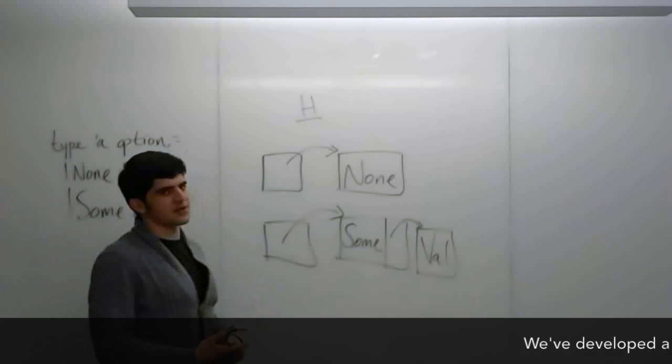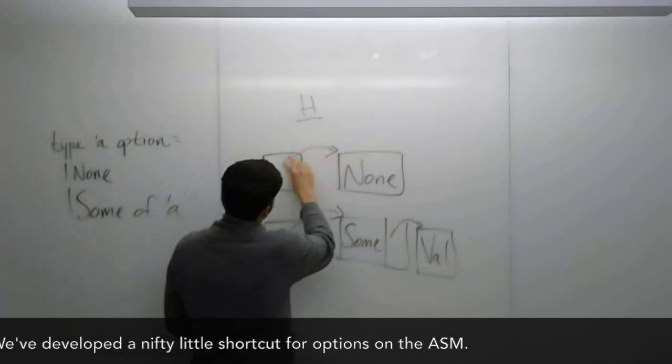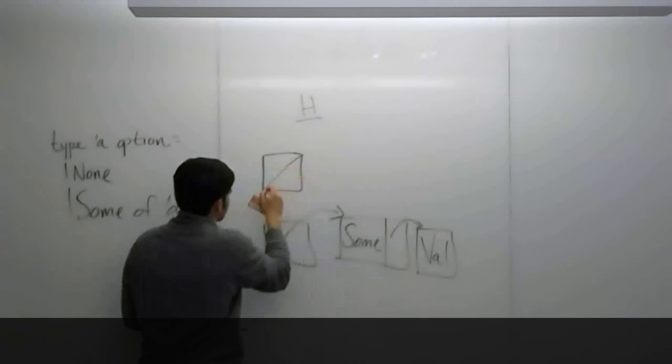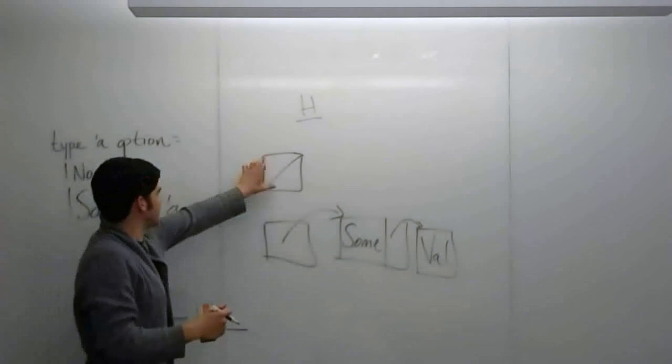So we've developed this nifty little shorthand. Instead of having to draw an arrow to none, we can just draw a slash in that box. And that means that this value is none.